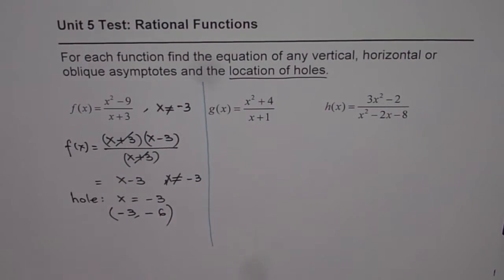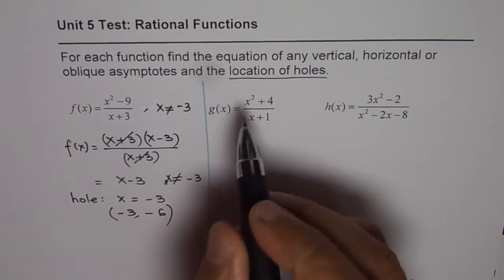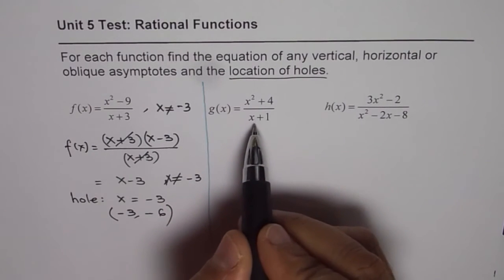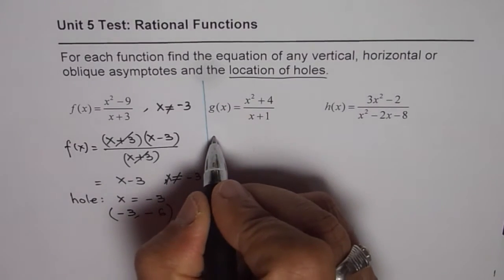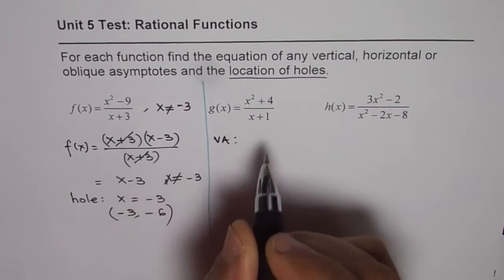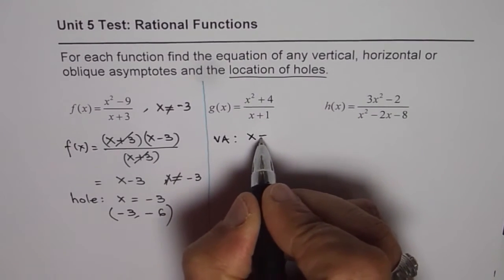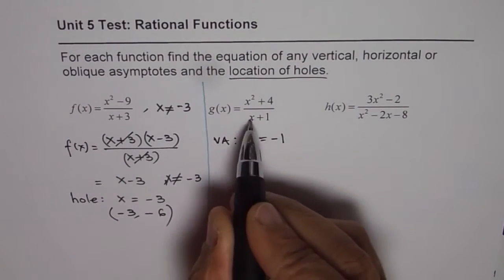Now the next one for us is g of x equals to x square plus 4 divided by x plus 1. So numerator cannot be factored. x square plus 4, x plus 1, they don't have any common factors. That means we have a vertical asymptote here. For denominator being 0, which will be at x equals to minus 1. So vertical asymptote at x equals to minus 1, that is one thing.